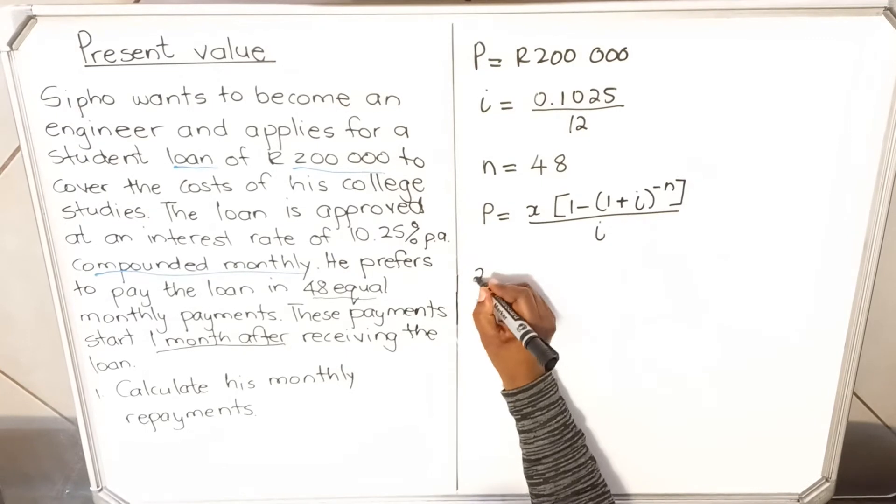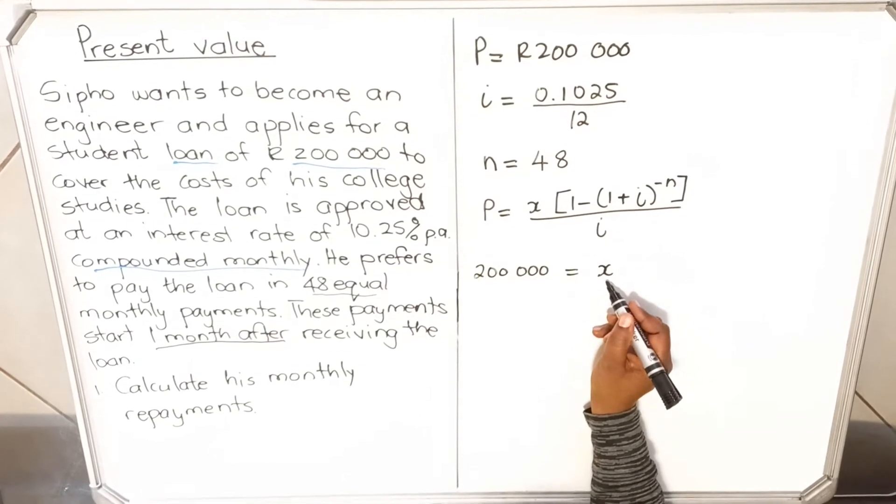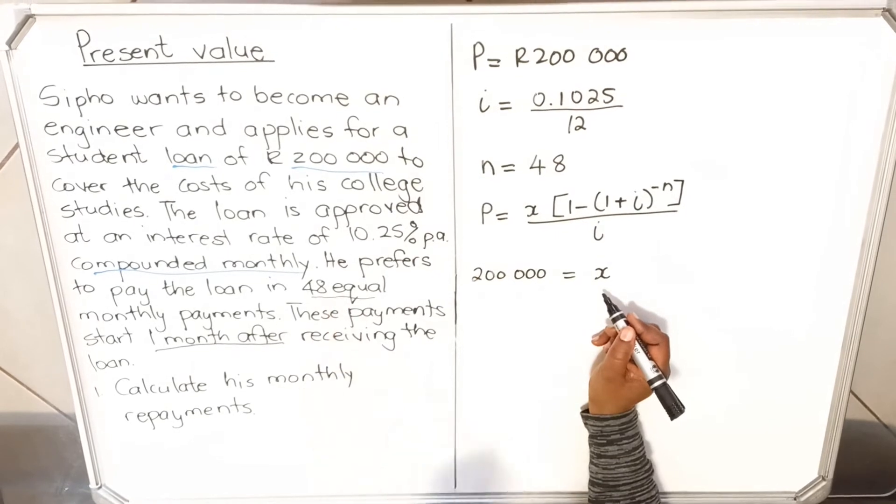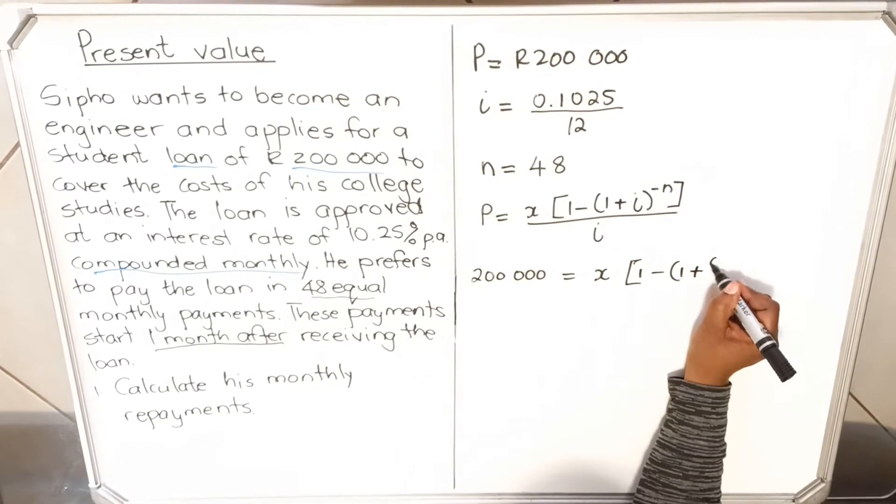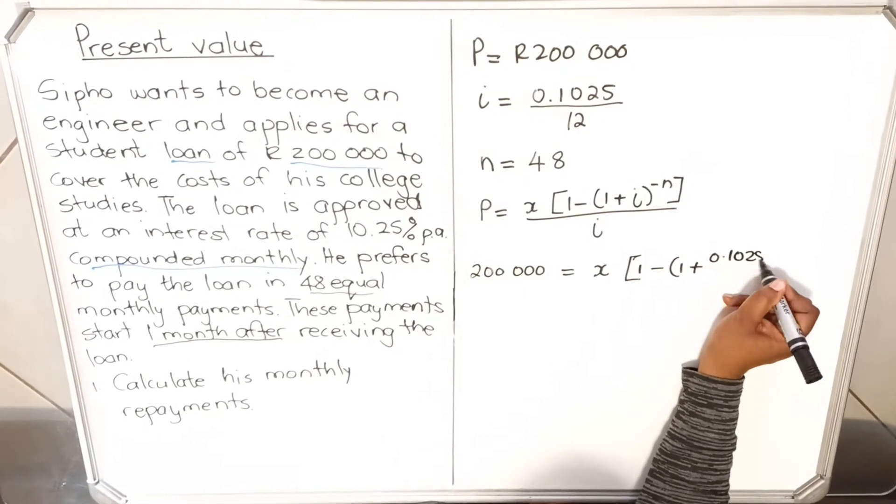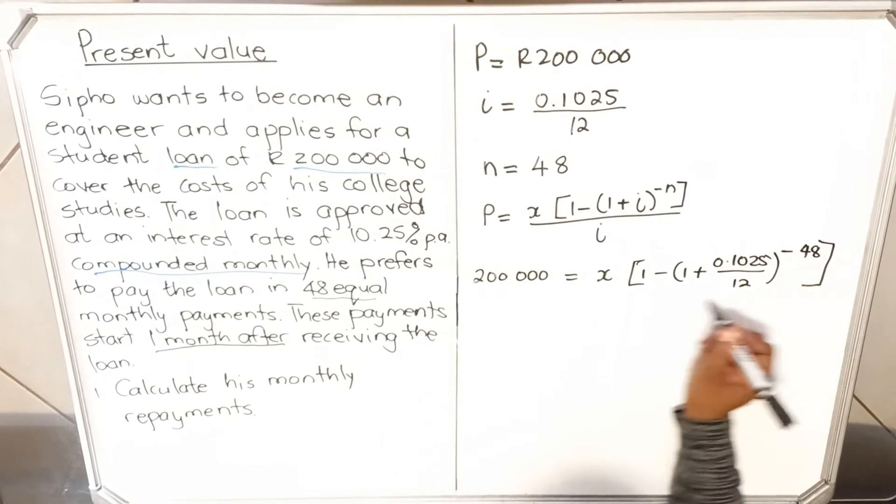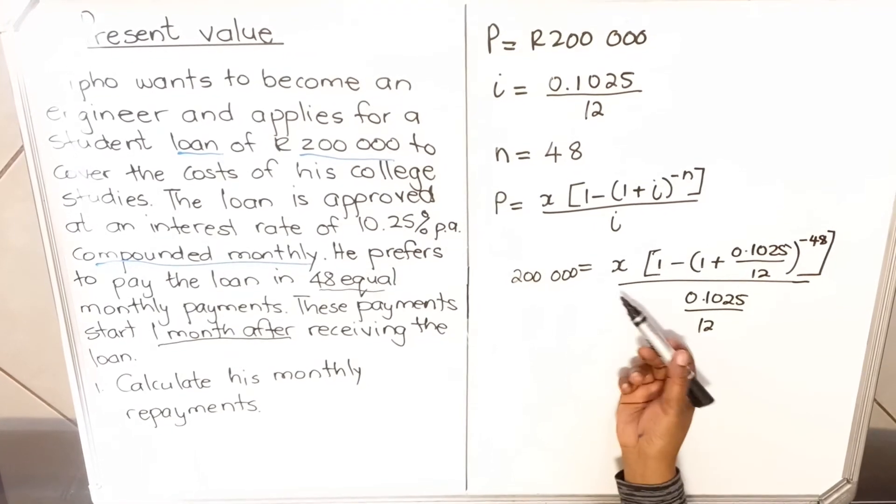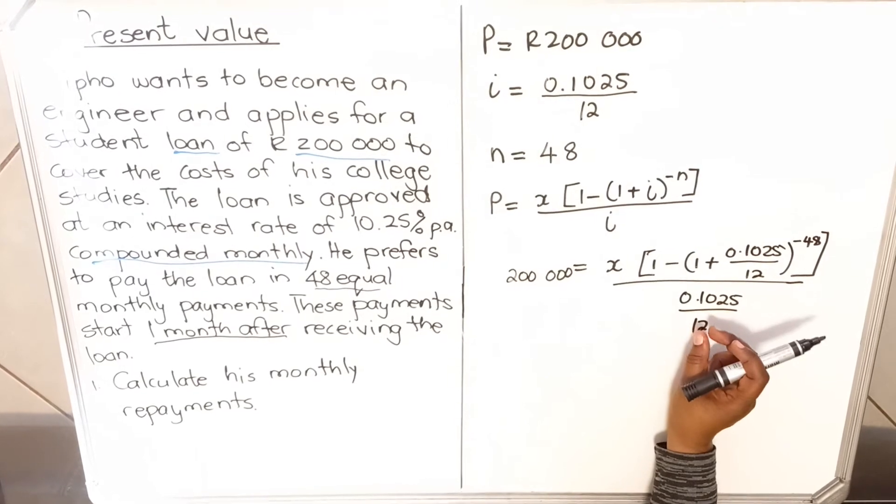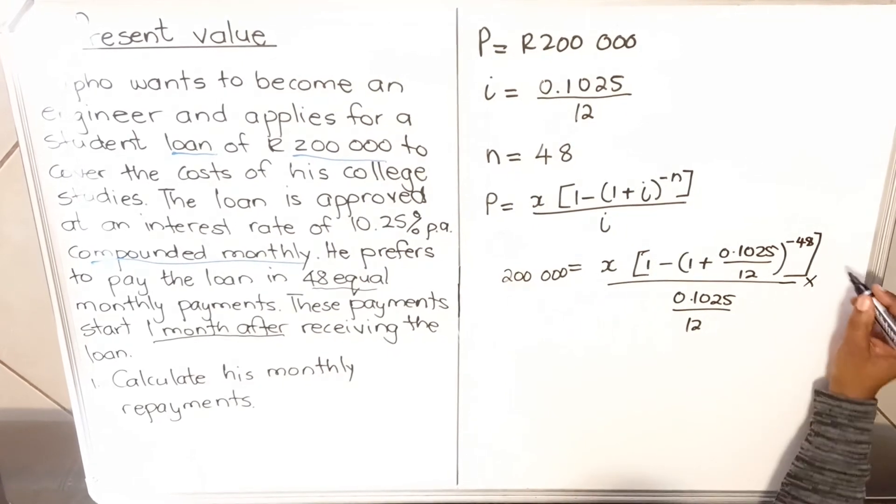My P was R200,000. x is the monthly payment that he'll pay every month. Remember they said you're going to do 48 equal payments of how much, that's what we need to find. Then the 1 comes with the formula, minus 1 plus the interest is 0.1025 divided by 12. When you close your bracket, the number of payments is 48, and then also close the bracket. Divided by the interest 0.1025 divided by 12. There are different ways you can find your x. Some learners prefer to multiply everything here and have a decimal. If you do that, don't round it off. I prefer getting rid of the denominator first, so I'm going to multiply by 0.1025 divided by 12 both sides.